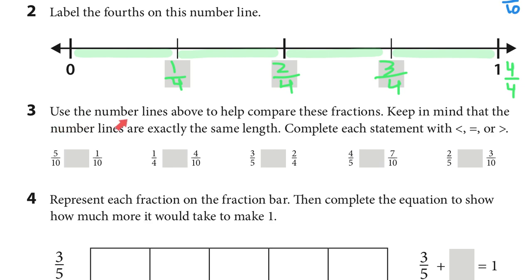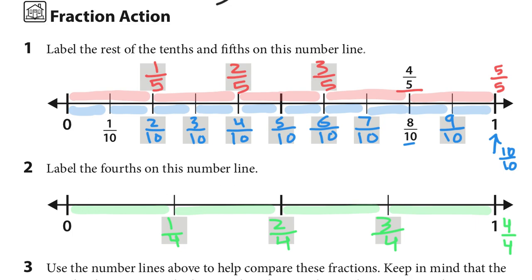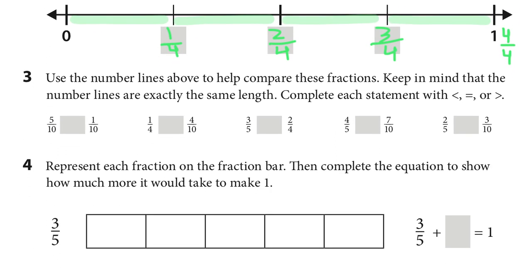Use the number lines above to help compare these fractions — keep in mind that the number lines are exactly the same length. Complete each statement with less than, equal, or greater than. We're going to compare five-tenths to one-tenth. Let's go up to the number line. Five-tenths would take us from zero all the way up to here, and one-tenth would take us all the way to there. I can see just by comparing these two lines that five-tenths is way longer than one-tenth.